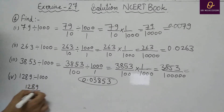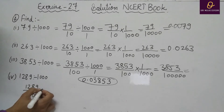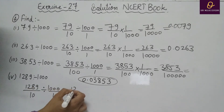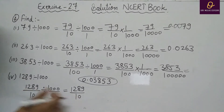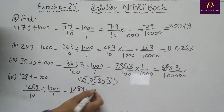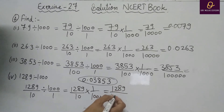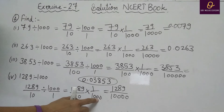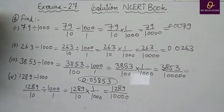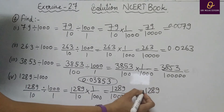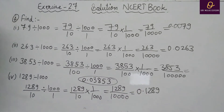Part D: 128.9 divided by 1000. Remove decimal: 1289 divided by 10, then divided by 1000 by 1. Divide changes to multiply by 1 by 1000. Multiply 10 by 1000 = 10000. So 1289 divided by 10000. Put decimal after 4 digits: 1289 has 4 digits so answer is 0.1289.